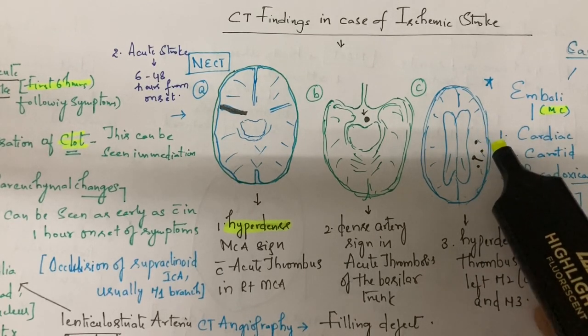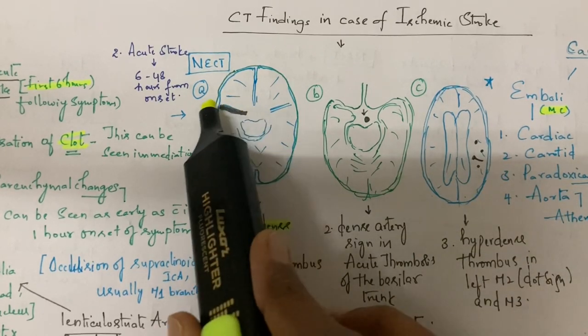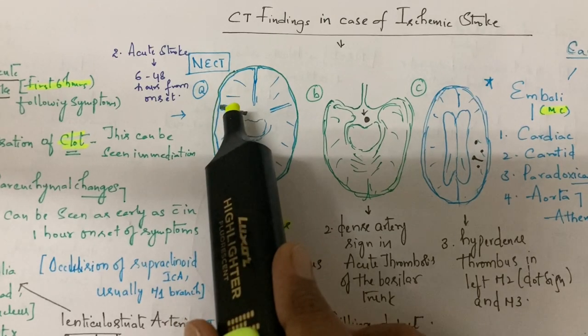Most important: why is this artery hyperdense? Normally flowing blood HU is 40.